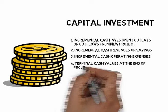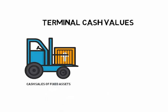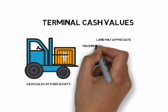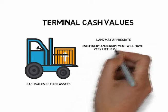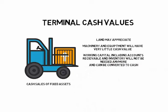Terminal cash values include the cash sales of fixed assets at the end of a project's life. Some fixed assets, like land, may even appreciate, while others, like machinery and equipment, will probably have very little cash value at the end of the project's life. The investment in working capital — which includes accounts receivable and inventory — will also not be needed at the end of the project, and therefore can be converted to cash.